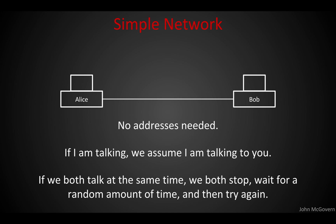So we have a simple network here, just two computers. When you have two computers on a network, you both know who you're talking to — there's only one other person. The only complexity is if they both talk at the same time: they'd create an electrical voltage that is neither plus 5 nor minus 5, summing the voltages together, causing a collision on that wire. We'd just back off for a random amount of time and each try sending again, and if we hear the other person transmitting, we shouldn't transmit as well.